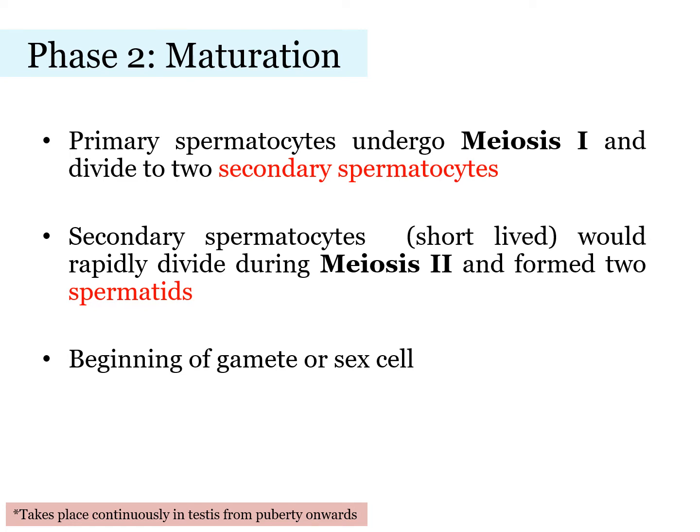After that, the primary spermatocytes enter Phase 2, maturation. In this phase, meiosis takes place. Primary spermatocytes undergo meiosis 1, producing secondary spermatocytes, and then meiosis 2 to produce spermatids. At this point, spermatids are in a haploid form and thus it is the beginning of gametes, or sex cells.